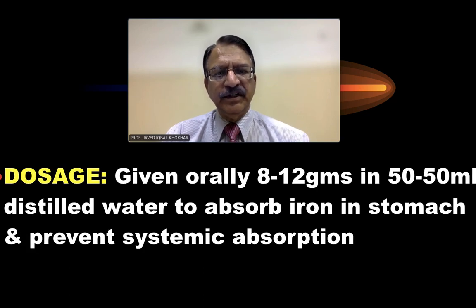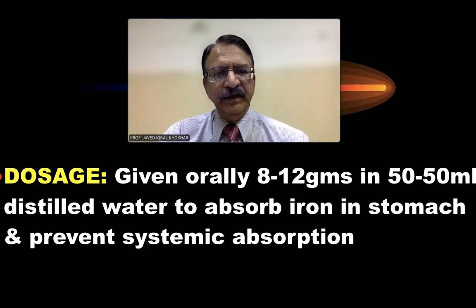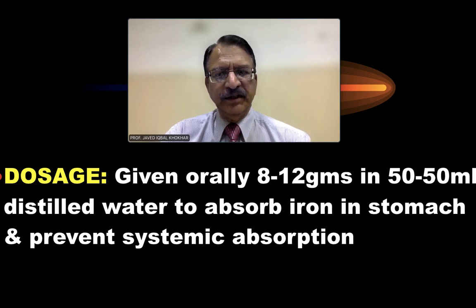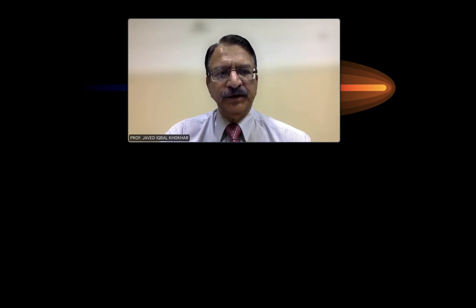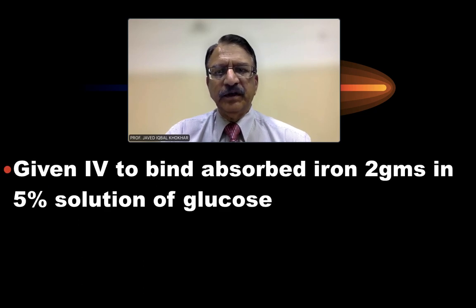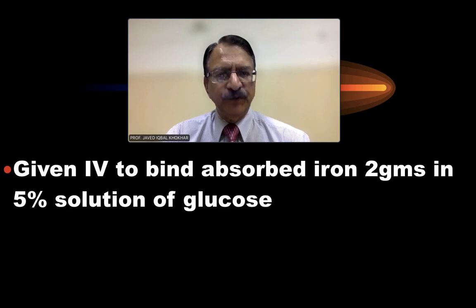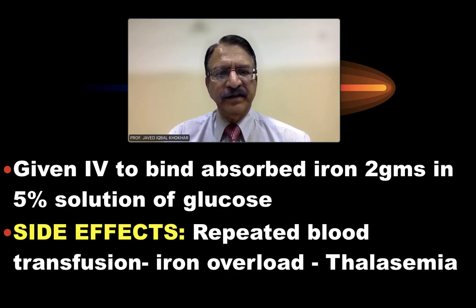The dosage is given orally as 8 to 12 grams in 50 ml of distilled water to absorb iron in the stomach and prevent systemic absorption. It can also be given intravenously to bind absorbed iron — 2 grams in 5% solution of glucose. Side effects include repeated blood transfusion requirements, iron overload, and thalassemia.